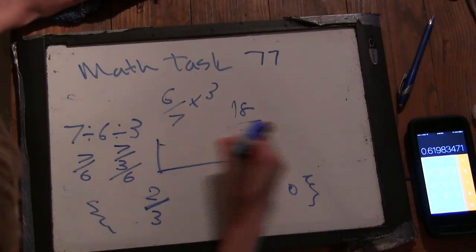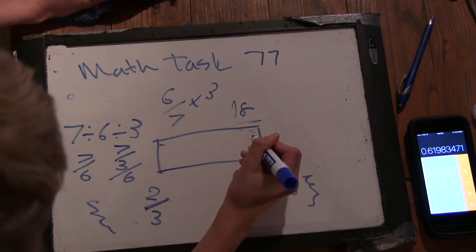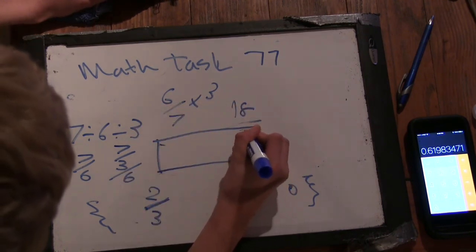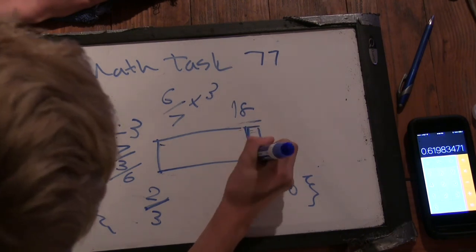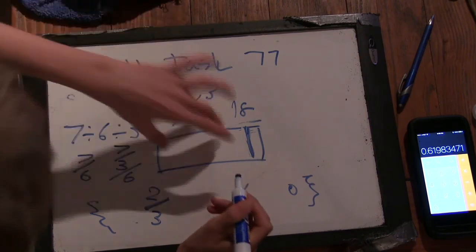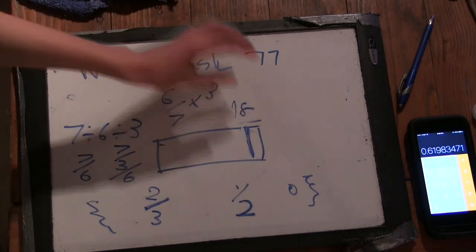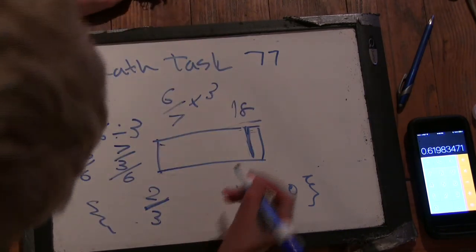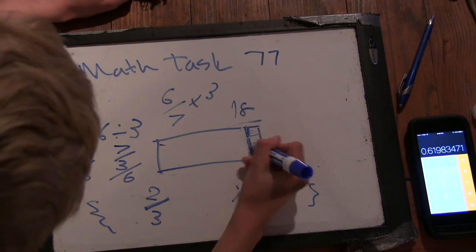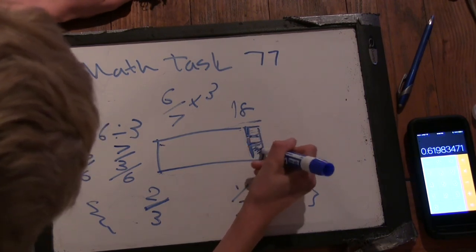So we have... What about... So this part is 1, and this part is 1 sixth. 1 sixth. Okay. So this part chopped into thirds, these are going to be 1 eighteenth. Is one of these.